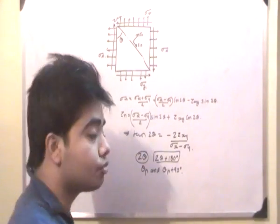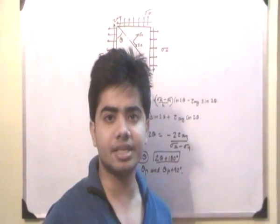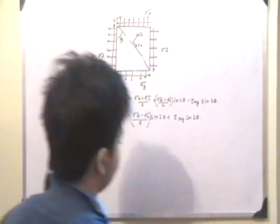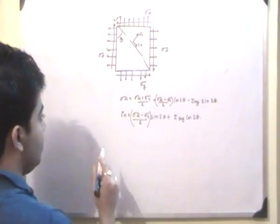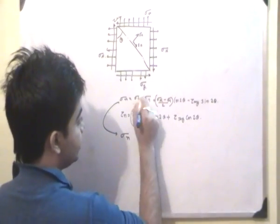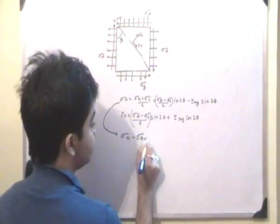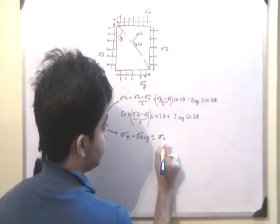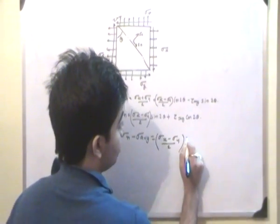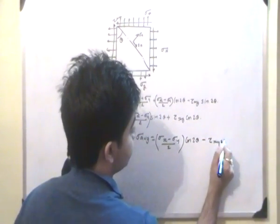The next concept is to find out the values of maximum and minimum normal stress. What we do here is recognize that sigma n equals sigma average plus (sigma x minus sigma y)/2 times cos(2θ), minus tau xy times sin(2θ), where sigma average equals (sigma x + sigma y)/2.